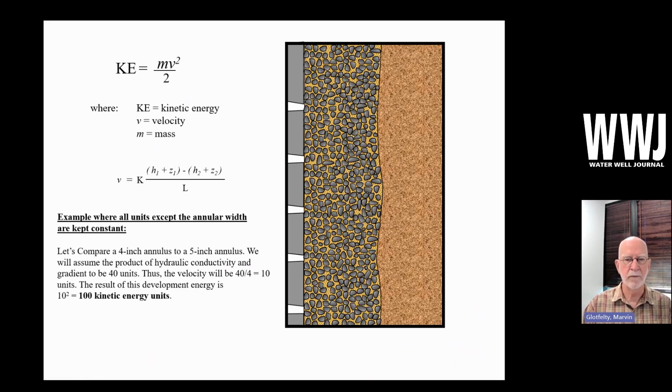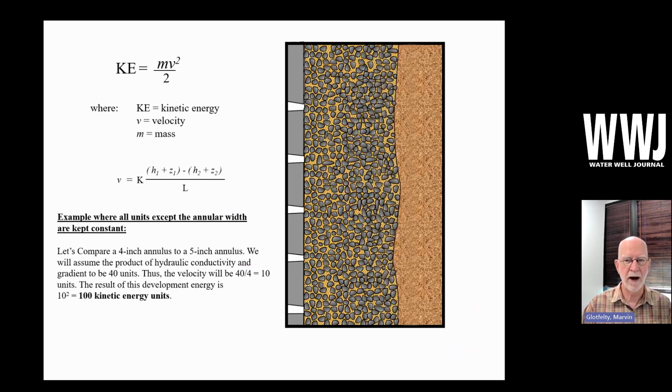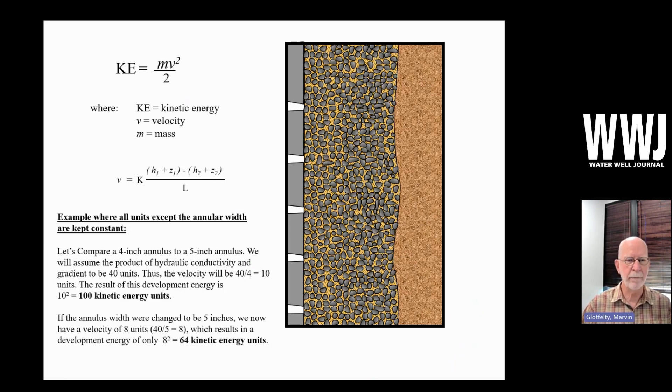All right, that's just a unitless value. But let's compare that with everything else being the same. But we're going to now switch from a four inch annulus to a five inch annulus. Do the same math. We have 40 divided by five instead of divided by four. So now the value of velocity is eight. And eight squared is 64 kinetic energy units.